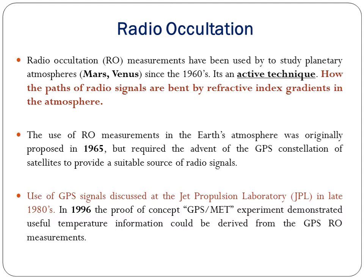The use of radio occultation measurements in Earth's atmosphere was originally proposed in 1965, but required the advent of the GPS constellation of satellites to provide a suitable source of radio signals. The use of GPS signals discussed at the Jet Propulsion Laboratory in the late 1980s led to the proof of concept GPS/MET mission, which demonstrated that useful temperature information could be derived from GPS RO occultation.